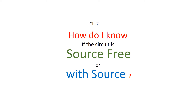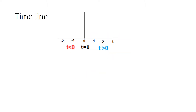Bismillahirrahmanirrahim. This is another effort to clarify the doubts of students about source-free circuits or circuits with source, or step response circuits. Before we start, let's repeat the timeline concept: t = 0 is where we are right now. Anything before that is t < 0, and anything that will happen in the future is t > 0.